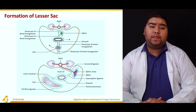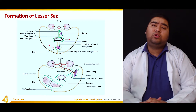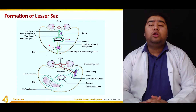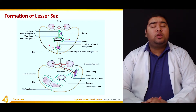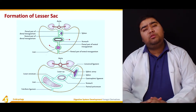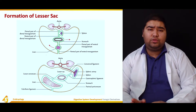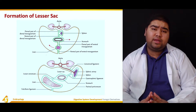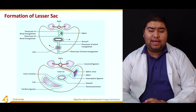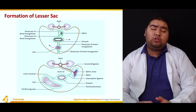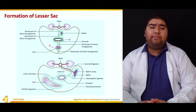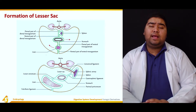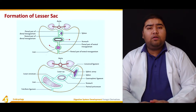To recap: the formation of the lesser sac involves the attainment of adult positions by the stomach, spleen, and liver. The stomach undergoes clockwise rotation and comes to lie on the left side. The liver expands rapidly and occupies the right side. The spleen develops and derives its blood supply from the developing abdominal aorta. In this way, the opening of the lesser sac comes to lie behind the stomach, and this opening is also known as the epiploic foramen.